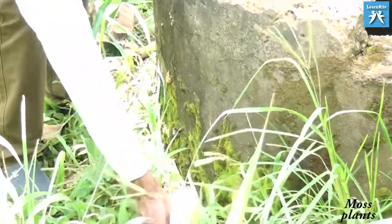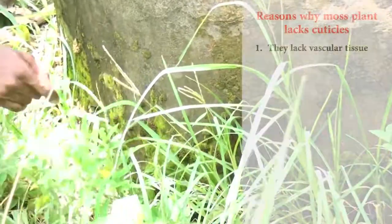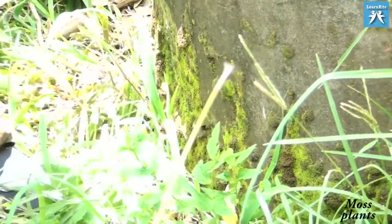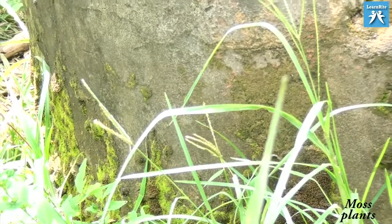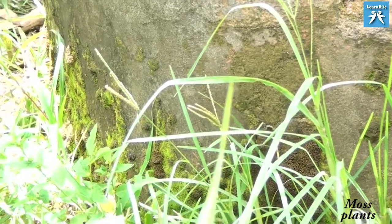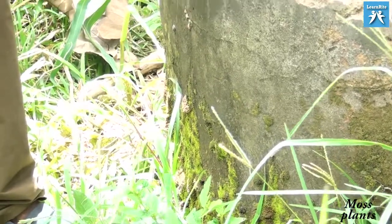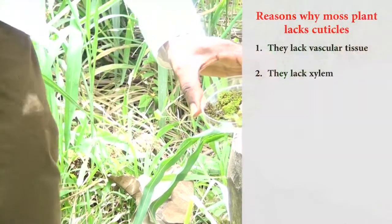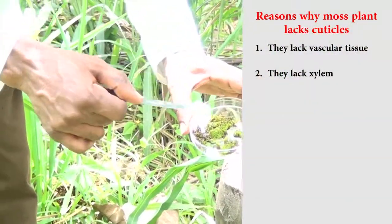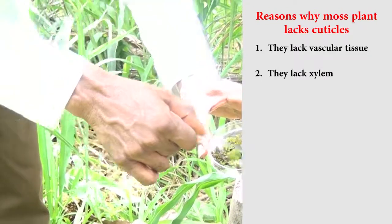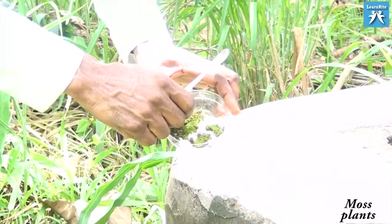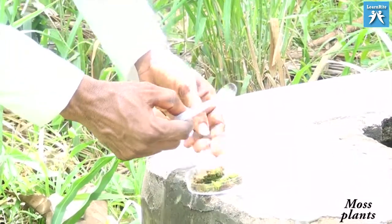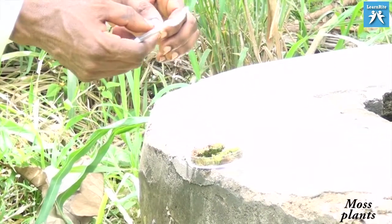The moss plant lacks cuticle because it also lacks vascular tissue. In higher plants like flowering plants, absorption of water and mineral salts occurs in the roots, and the water is carried to other parts of the plant. The moss plant lacks vascular tissue — it lacks xylem — so the entire plant performs absorption of water and mineral salts. If cuticle covered the body of the organism, it could not absorb water.